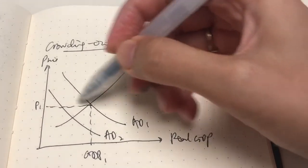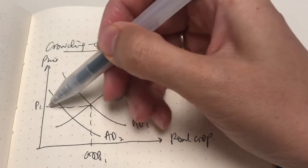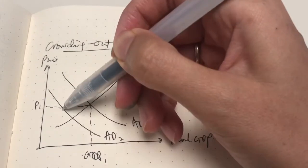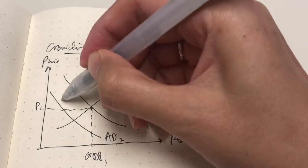Now with a recession, remember with a ratchet effect, the price level remains at P1, but now we have a lower GDP. Basically, this was our problem with a recession.